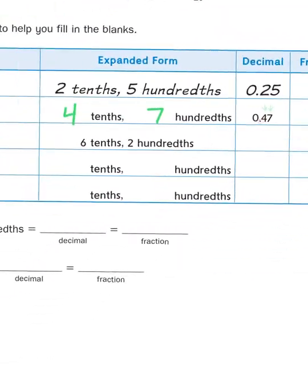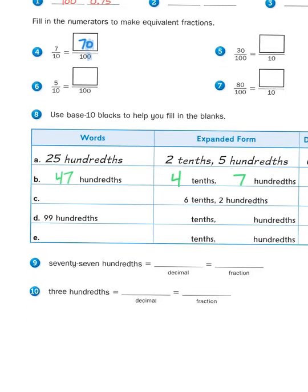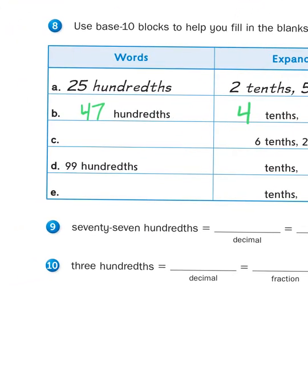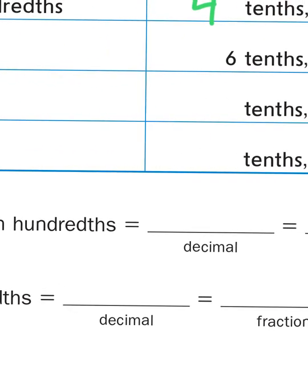And then finally, down here, it says take that word form and write it out as a decimal or as a fraction. If I look at number 10, 3 hundredths, to represent 3 hundredths, I have to remember that there's always going to be a tenth involved, even if there are no tenths, so 3 hundredths would be represented as 0.03.